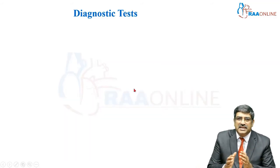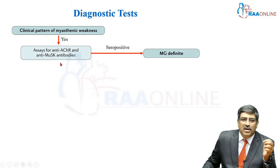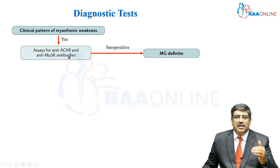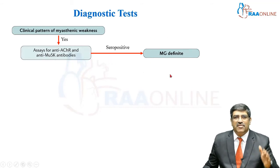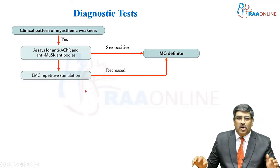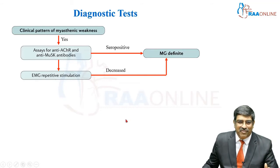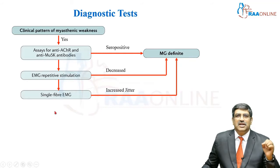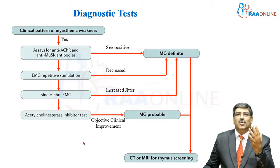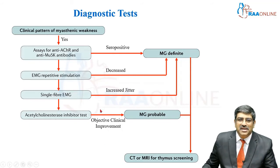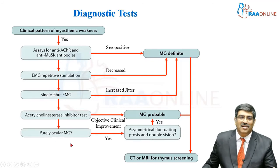So how to summarize the diagnostic testing? First, you look at the clinical features. If clinical features are present, you go for serum assay of anti-acetylcholine receptor antibody as well as muscle-specific tyrosine kinase antibody. If it is positive, then the diagnosis of myasthenia gravis is established. If it is equivocal, you do an electromyogram with repetitive stimulation. If it shows a decremental response, then myasthenia gravis is definite. If that is equivocal, then do a single fiber twitch — if there is a jittery response, your diagnosis is established. If that is also doubtful, you do a tensilon test or an ice pack test; if clinical improvement is seen, then probably it is myasthenia gravis, and it might be pure ocular myasthenia gravis.